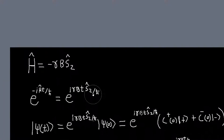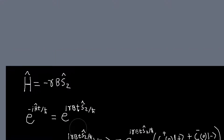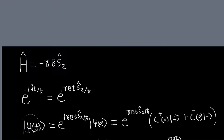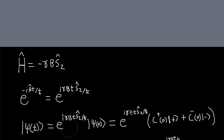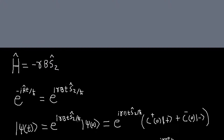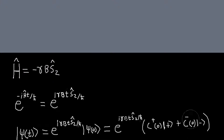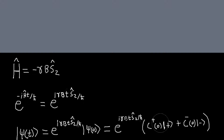Our state ket as a function of time is just going to be our time evolution operator applied to our initial state ket. We're going to assume that our initial state is written with the initial coefficients of the two kets being c-plus of zero and c-minus of zero, and we're applying this operator.